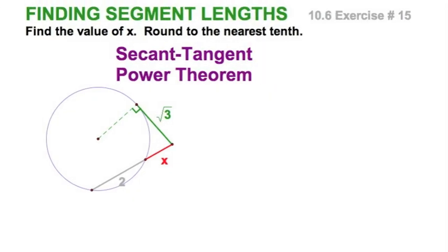Well, here's another case for the secant-tangent power theorem. Exercise number 15. Well, let's set this up. But, you see our tangent segment, this time, is a radical, or has a length that is radical 3. My exterior portion of the secant is x. Interior is 2. So, that makes the whole secant x plus 2. Red times blue equals the green squared. So, let's set this up.